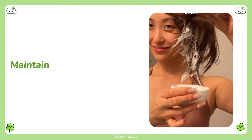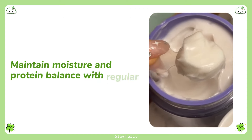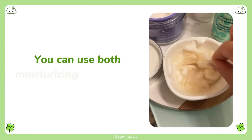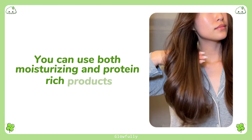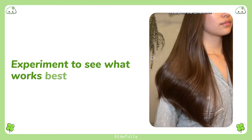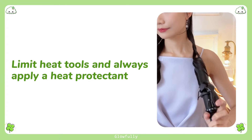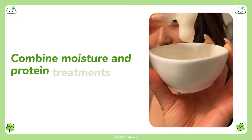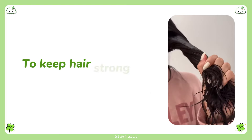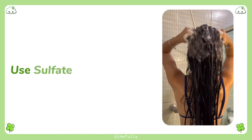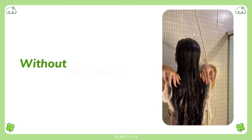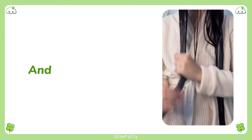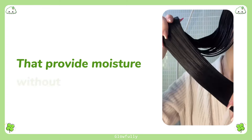Care tips for medium porosity hair: maintain moisture and protein balance with regular deep conditioning treatments to keep hair healthy. You can use both moisturizing and protein-rich products — experiment to see what works best for your hair. Limit heat tools and always apply a heat protectant. Combine moisture and protein treatments in your regimen to keep hair strong and hydrated. Use sulfate-free shampoos to cleanse without stripping the hair of its natural oils. Opt for leave-in conditioners and styling creams that provide moisture without heaviness.